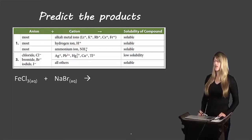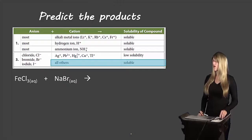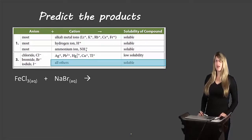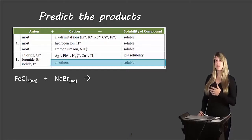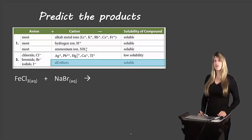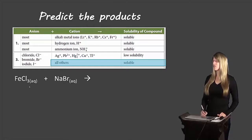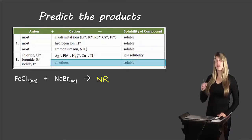Let's look at one more example: iron(III) chloride reacting with sodium bromide — both aqueous. Looking at our chart, chlorides and bromides fall under the same category, section three. With the exception of a few cations that form insoluble products, almost everything else is soluble. Even though iron is with chlorine and it's soluble, when iron goes with bromine it's still going to be soluble because it follows the same guidelines. Similarly, sodium with bromine switching to chlorine is still soluble. So both products — iron(III) bromide and sodium chloride — are aqueous. Since both are aqueous, there is no reaction, so you write 'NR' or 'no reaction.'